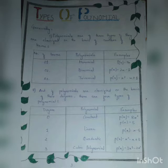And after that, I have written Types of Polynomial. If Polynomial are classified on the basis of the number of terms, there are three types: Monomial, Binomial and Trinomial. And if they are classified on the basis of the degrees, there are four types: Constant, Linear, Quadratic and Cubic.